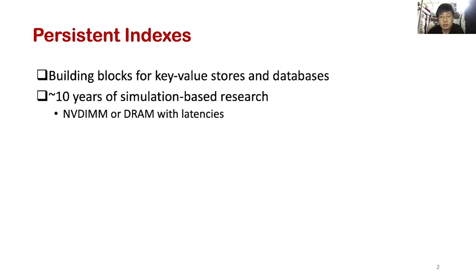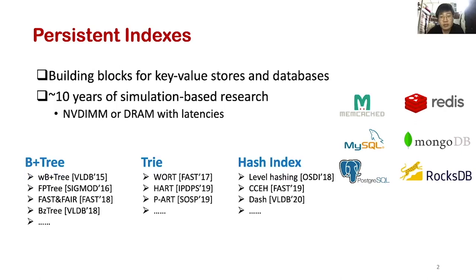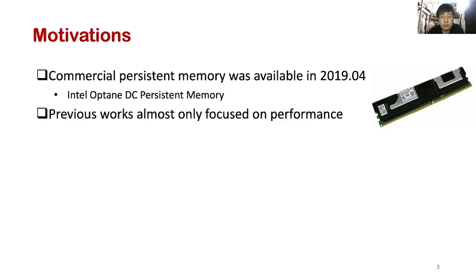Our work is about persistent indexes, building blocks for many key-value stores and databases, such as Memcached, Redis, MySQL, MongoDB, and so on. A lot of works have been published in the past decade. Many of them are simulation-based research. Commercial persistent memory devices, such as Intel Optane DC PMM, were available two years ago. It is time to think about applying existing persistent data structures in practice.